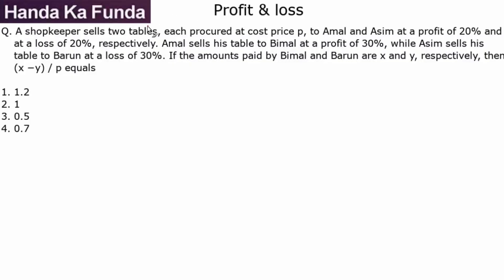Hi everyone, I'm Ravi Handa, founder of handakafunda.com. Welcome to another question on profit and loss. A shopkeeper sells two tables, each procured at cost price p, to Amal and Asim at a profit of 20% and a loss of 20% respectively.